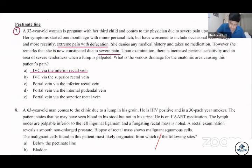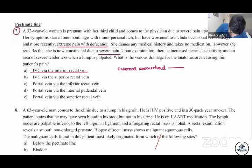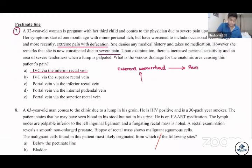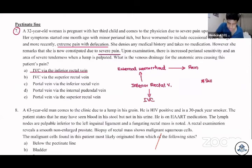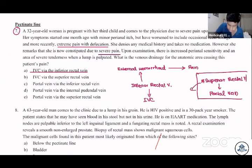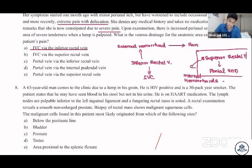The answer is A — inferior vena cava. This is the external hemorrhoid, and they are asking where it is coming from — it is due to the inferior rectal vein, which drains into the inferior vena cava. Remember, the superior rectal vein drains into the portal system — that is internal hemorrhoids.